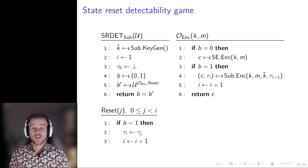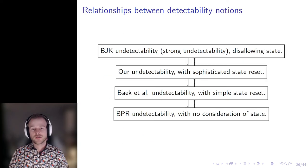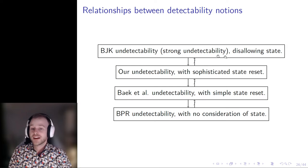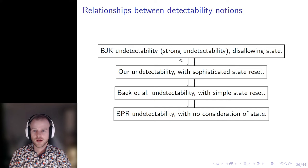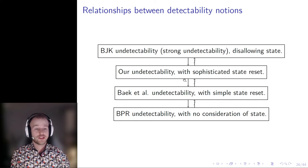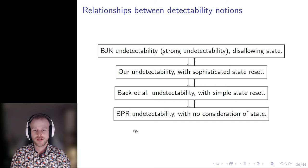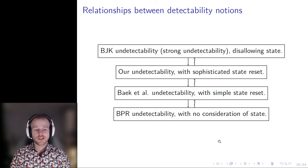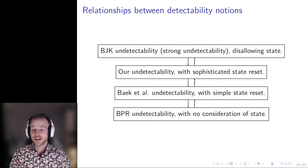Here are three existing definitions of detectability along with our definition, placed to demonstrate which definitions imply which others. If an ASA is undetectable according to BJK, it has no state, and therefore will be undetectable under our notion of state reset, as the reset oracle has no effect. Our definition implies that of Bayek et al., since their state reset is a special case of ours. Any of these definitions implies that of BPR, since BPR's definition does not account for state at all. More surprisingly, no two definitions here are equivalent — there are separating examples at every level — and these examples are not artificially constructed but are the actual ASAs from the papers discussed.